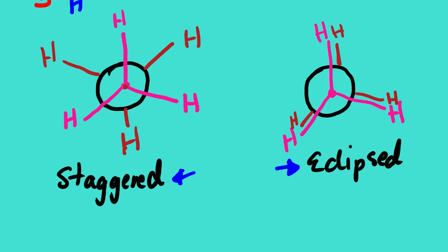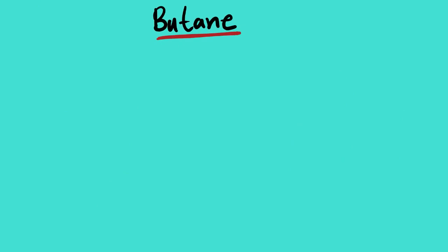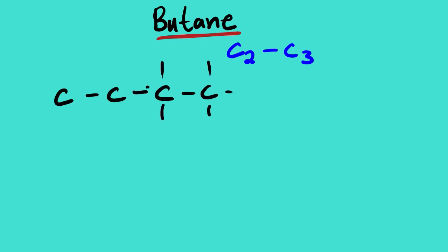Let us look at another organic molecule that will explain this in more detail. Let us discuss the Newman projection of butane, and we are going to view the Newman projection of butane through carbon number two and three. This is very important because butane consists of four carbon atoms, so we need to view it from carbon number two and carbon number three. Looking at the Lewis dot diagram of butane, we have something like this where the lines have hydrogen atoms.